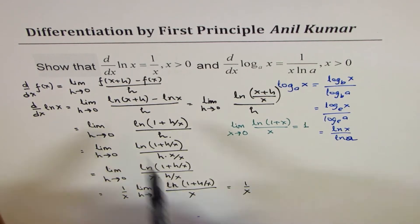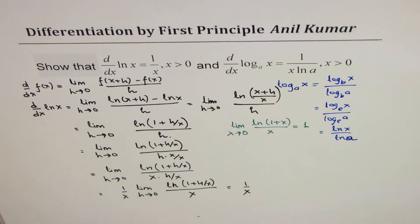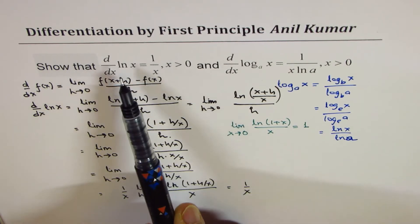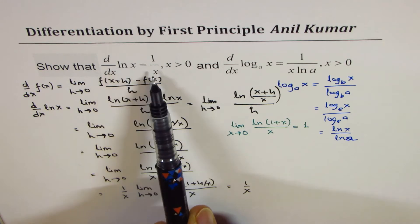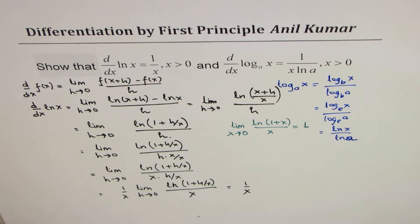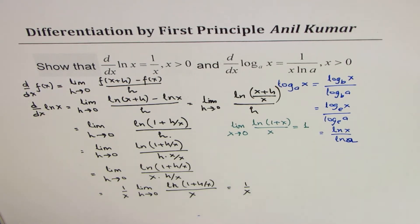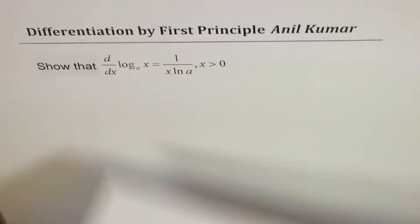That is how you can prove that the derivative of ln(x) is 1 over x. Of course, this function is only defined when x is greater than 0. That's the first part. Now let's do the same operation for log to any base a.